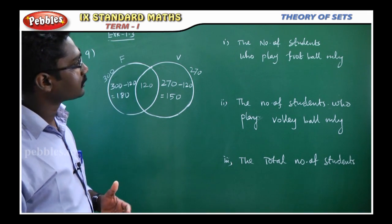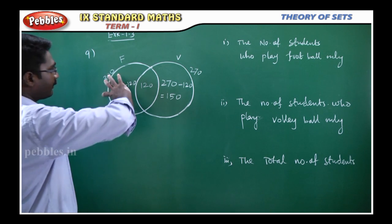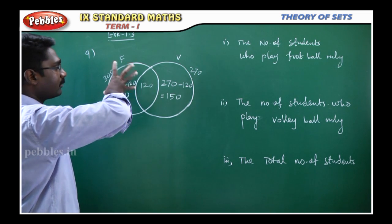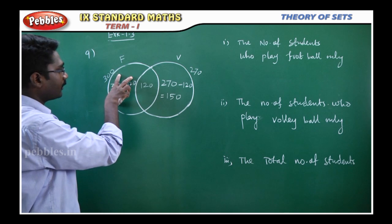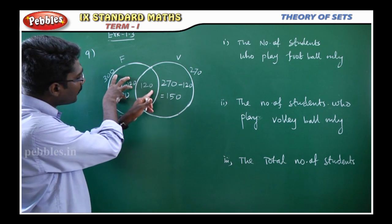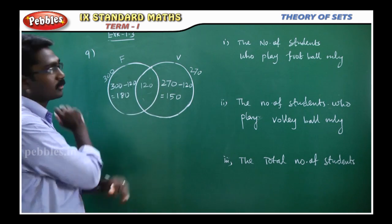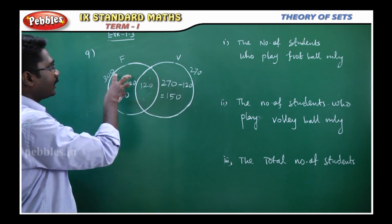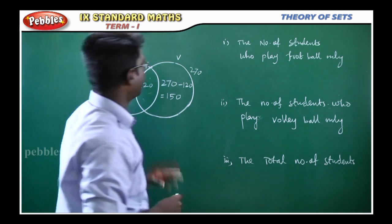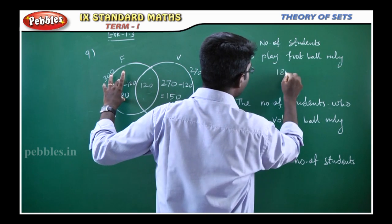First, the total number of students who play football only. In the diagram, the football circle shows football only in the particular area. The answer is 180 students.